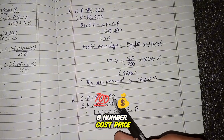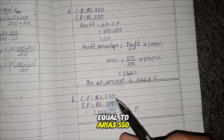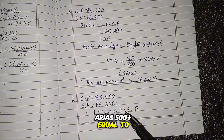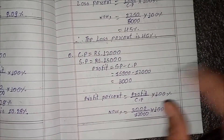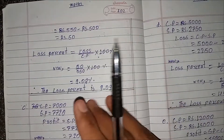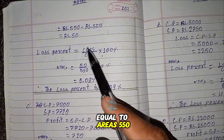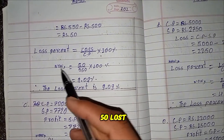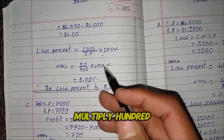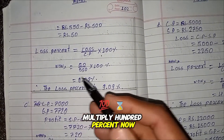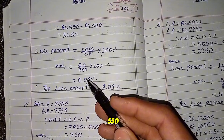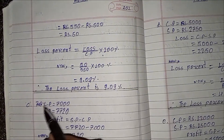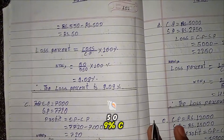Part B: Cost price equals RS 550, selling price equals RS 500. Loss equals CP minus SP equals 550 minus 500 equals RS 50. Loss percent equals loss divided by CP multiplied by 100 percent equals 50 by 550 multiplied by 100 percent equals 9.09 percent. Therefore, the loss percent is 9.09 percent.